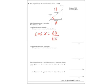So when you're finding an angle, I'm running out of room here, x is going to be equal to cosine inverse, shift cos, of 60 over 110. Stick that in your calculator, and you should end up with, to one decimal place, 56.9.